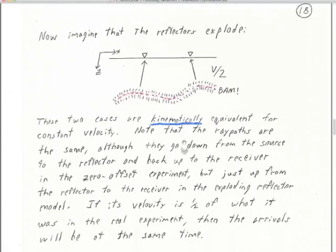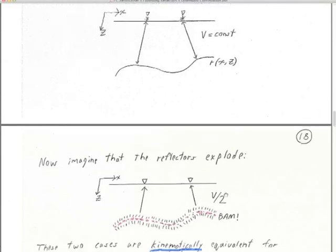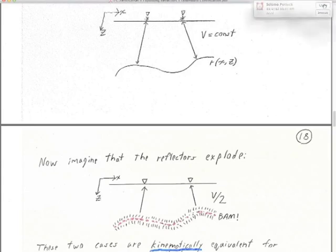Now imagine in that cross section that the reflectors explode. At time zero, when the source goes off, instead of the source going off at the surface, the whole reflector explodes at time zero. If you take whatever velocity you had and divide it by two, the waves will go up from the reflector to the receivers along exactly the right path. Because we divided the velocity by two, it's going to get there at the same time — it only has to traverse that path once, not in both directions.